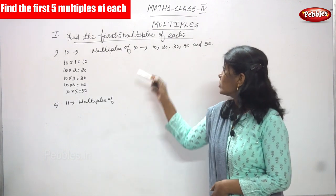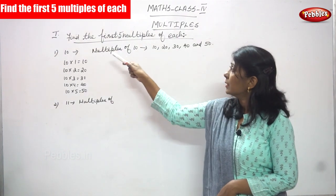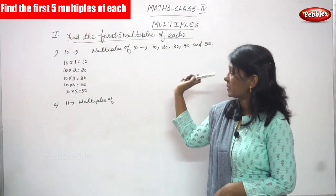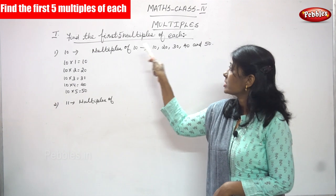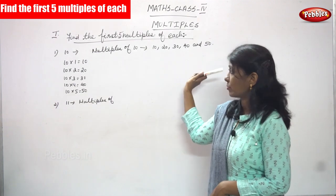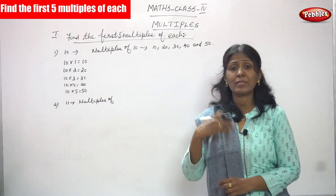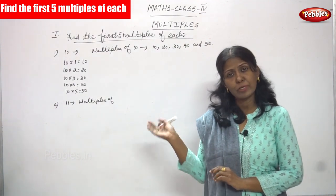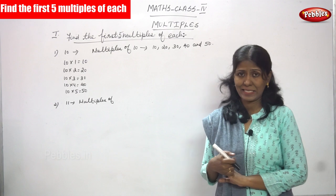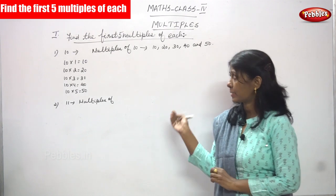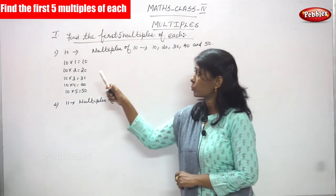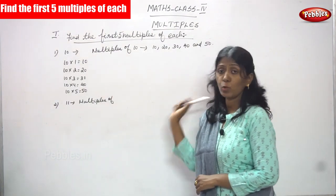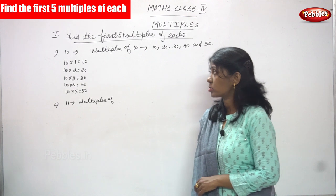Now we are going to see some problems in multiples. Find the first five multiples of each. Before that we have seen some examples, and now we are going to do the exercises. Let's start the problem. The first problem is 10 — you have to find the multiples of 10.